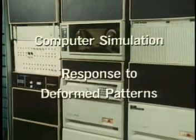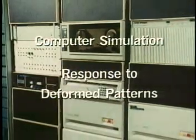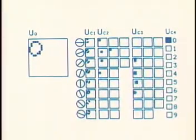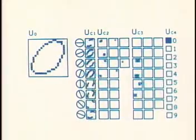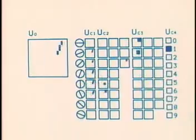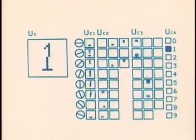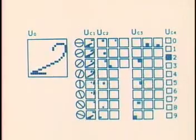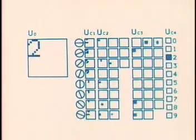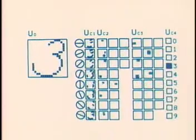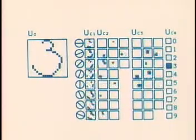You will see next how the neocognitron correctly recognizes input patterns when they are distorted. As may be seen in this picture, even though the input pattern has been increased or diminished in size, or is skewed in shape, the response of the cells of the deepest layer is not affected. Sometimes when the input pattern has been distorted too much from the training pattern, the response of the cells in the deepest layer is weak, but still the response is elicited from the correct cell.